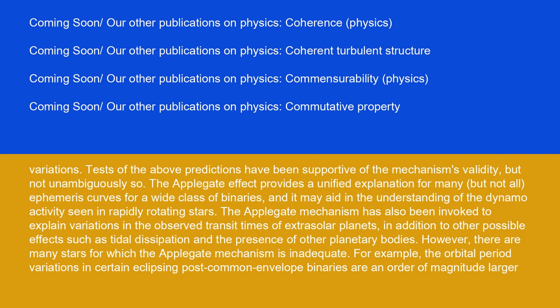Tests of the above predictions have been supportive of the mechanism's validity, but not unambiguously so. The Applegate effect provides a unified explanation for many, but not all, ephemeris curves for a wide class of binaries, and it may aid in the understanding of the dynamo activity seen in rapidly rotating stars.